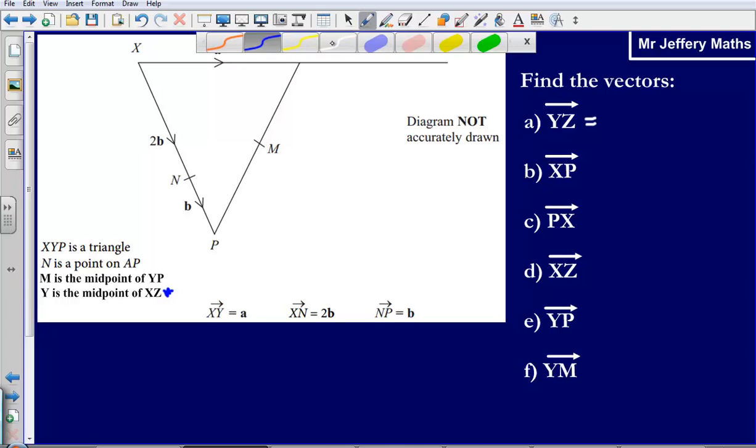If we are going from X to Y and that's being described as a, then we're essentially at the halfway point. We're told that this direction, going from X to Y is a, and that distance is being described as a as well. So to get from Y to Z, that is also going to be a.